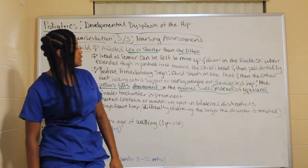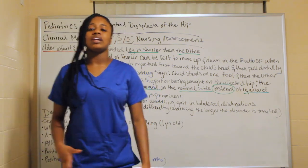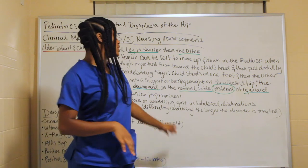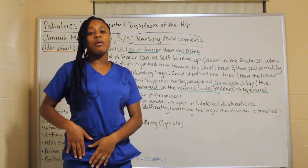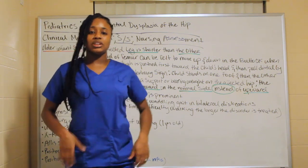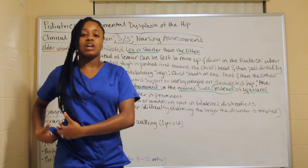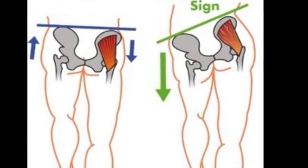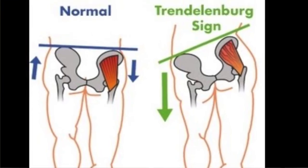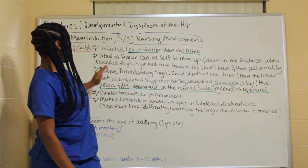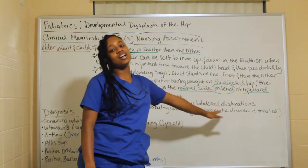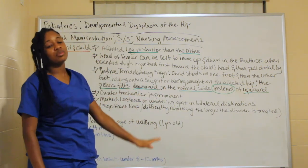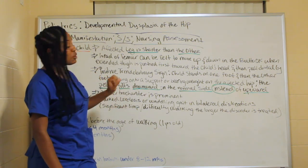A positive Trendelenburg sign: you tell the child to stand on one foot at a time. On the affected side, there will be difficulty with weight bearing. Normally as you shift left to right, the pelvis moves upward. In hip dysplasia, the pelvis tilts downward on the normal side instead of upward — that is a positive Trendelenburg sign. The greater trochanter will also be more prominent and visible.